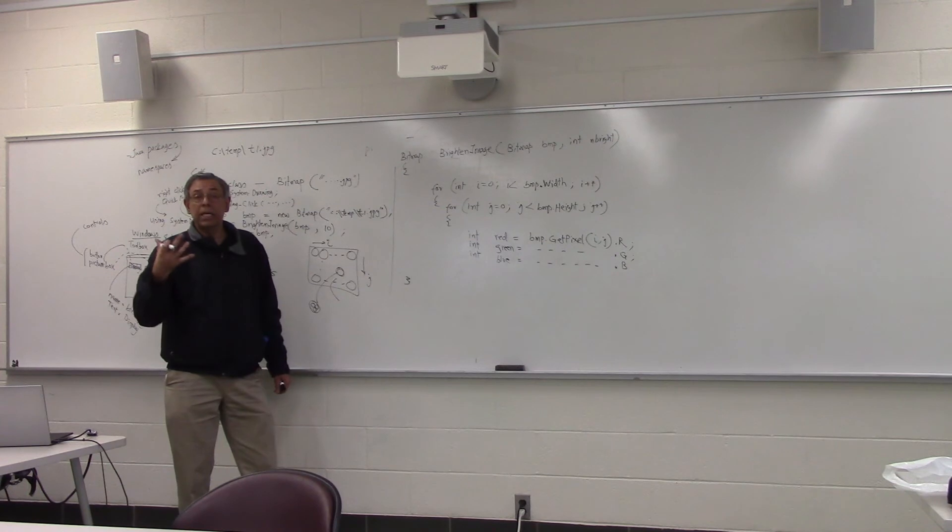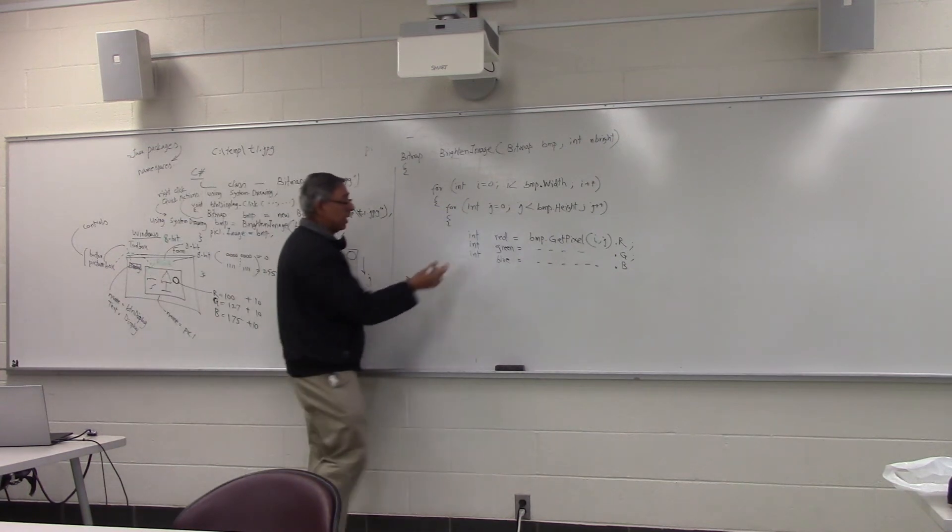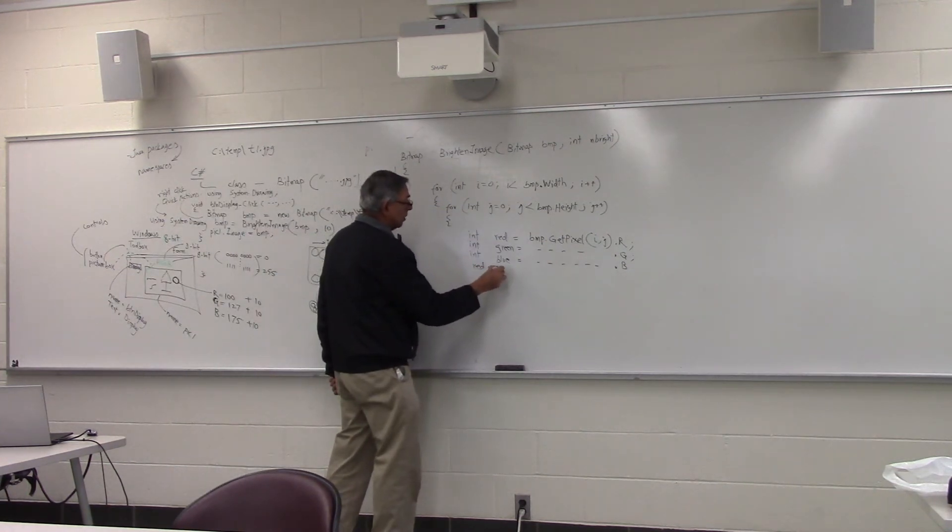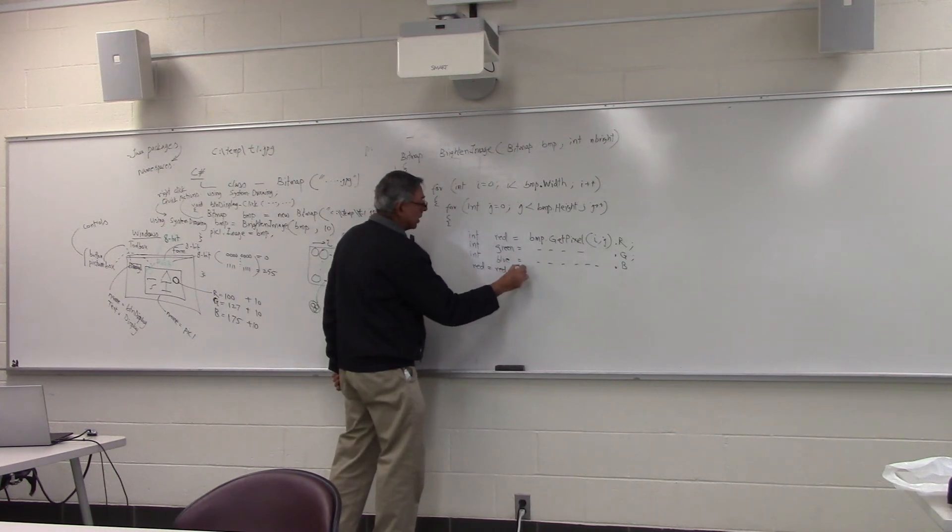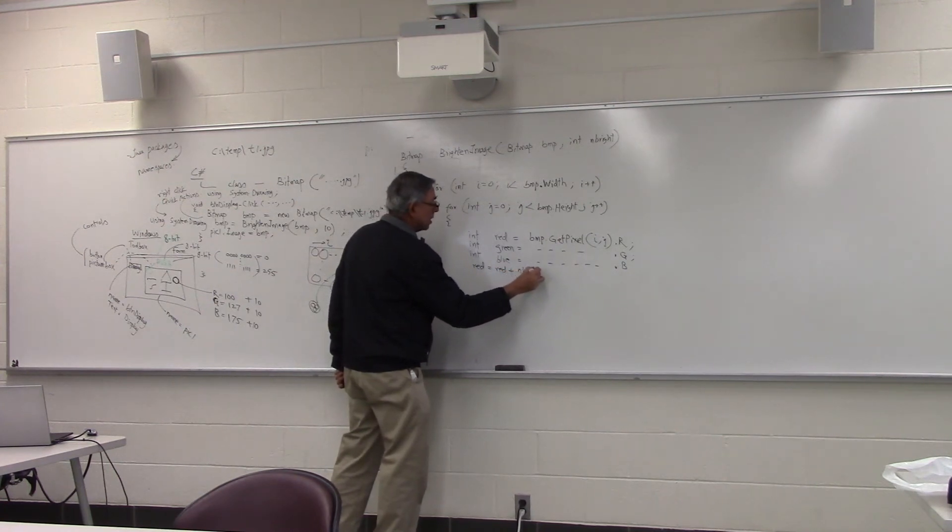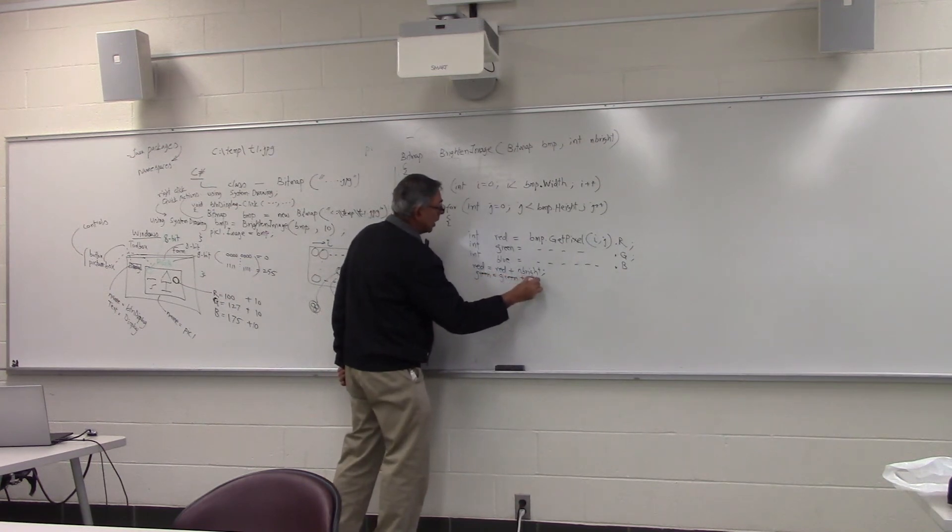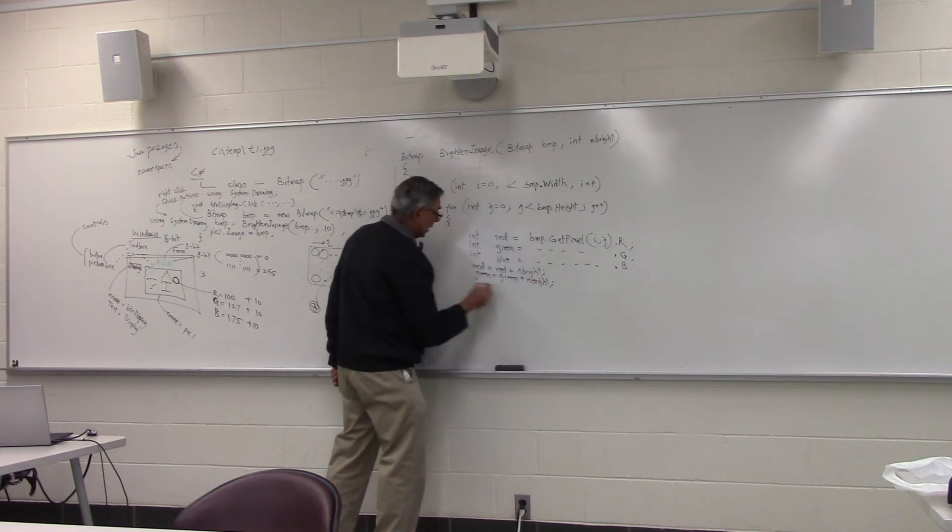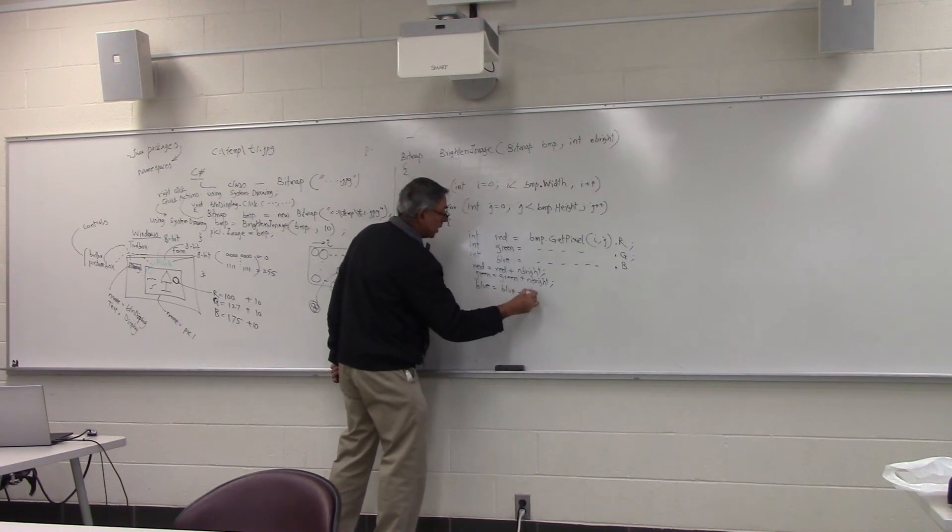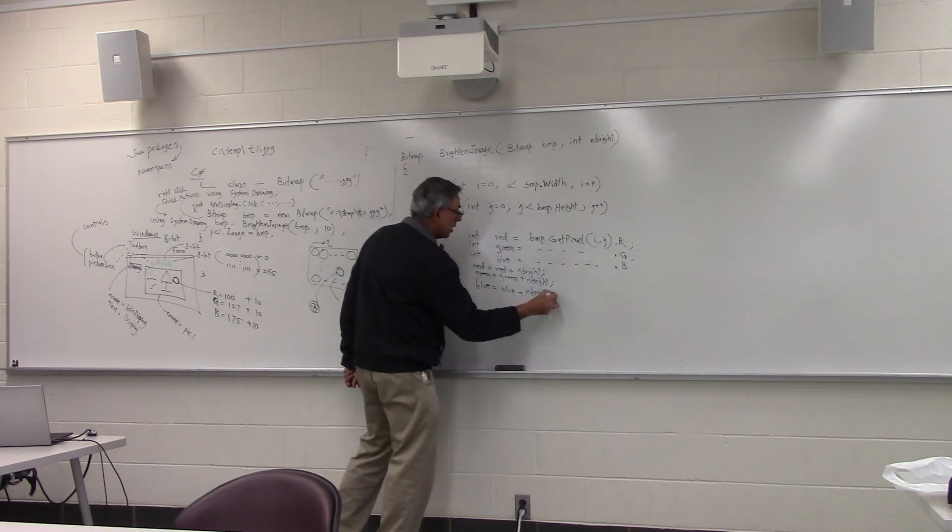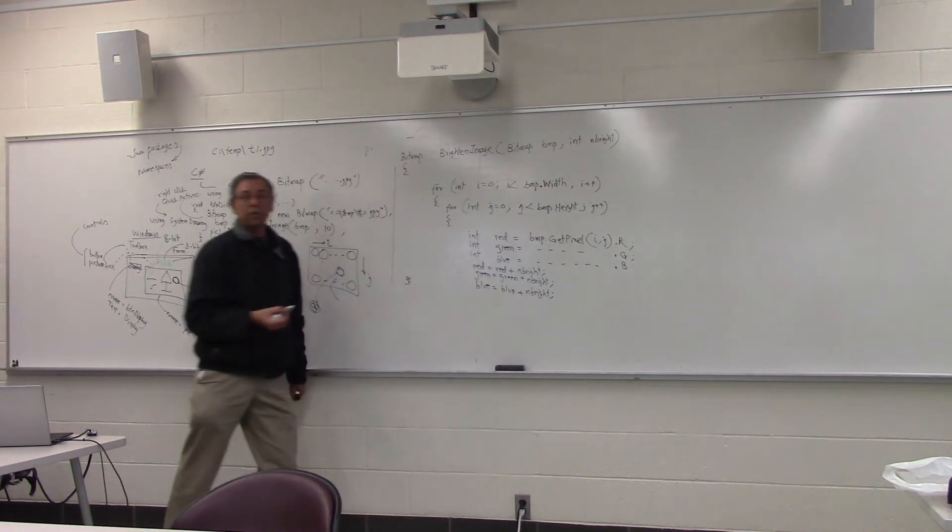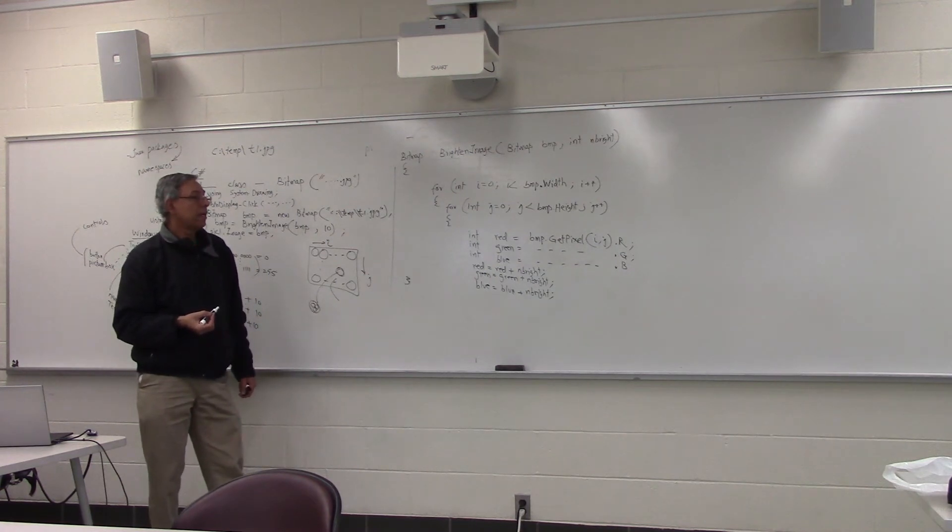All we have to do is add 10 to the red value. You'll say red equal to red plus n bright. Green equal to green plus n bright. And similarly, blue equal to blue plus n bright. And now what do we have to do? We have to put it back in the pixel.